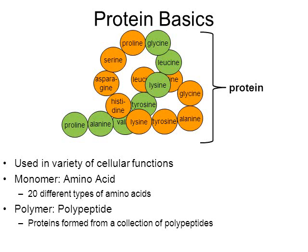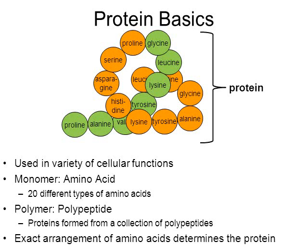Proteins can be made from maybe only one polypeptide. Other proteins are made from two, three, or four polypeptides, so proteins can be rather large. It's this exact arrangement of amino acids that determines what type of protein it is and what job it does. If one single amino acid is changed in the wrong location, that can have drastic impacts on the overall protein.